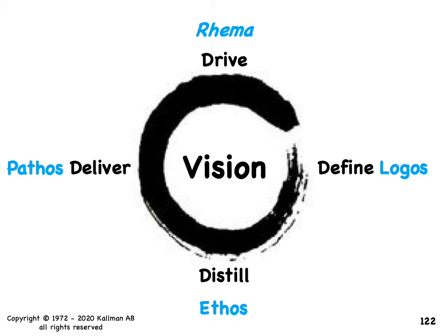Again, as with the 4R model, Logos, Ethos, Pathos, Rheema are very similar ideas. It's the talk and the walk. Logos are your definitions, your words. Ethos are your ethics that you're distilling. Hopefully your team is able to deliver with passion. And as you're doing that and driving the results, it comes to life. That's how you speak life into a team, how you breathe life into the team. And the Rheema — the word in action — should be a manifestation of the vision you're trying to achieve.